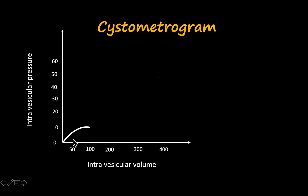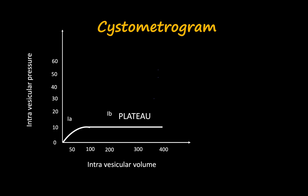When there is additional volume in the bladder beyond 50 ml up to about 300 ml, the curve obtained is known as phase 1b. This is the plateau phase because of the flatness of the segment. There is minimal or no change in pressure — it remains at about 10 centimeters of water even as bladder volume increases from 100 to 200 to 300 ml. Phase 1b represents the relaxation of the bladder smooth muscle.